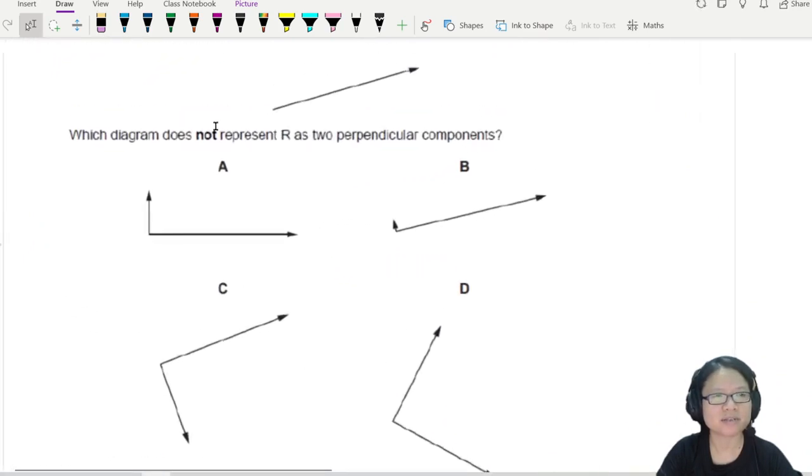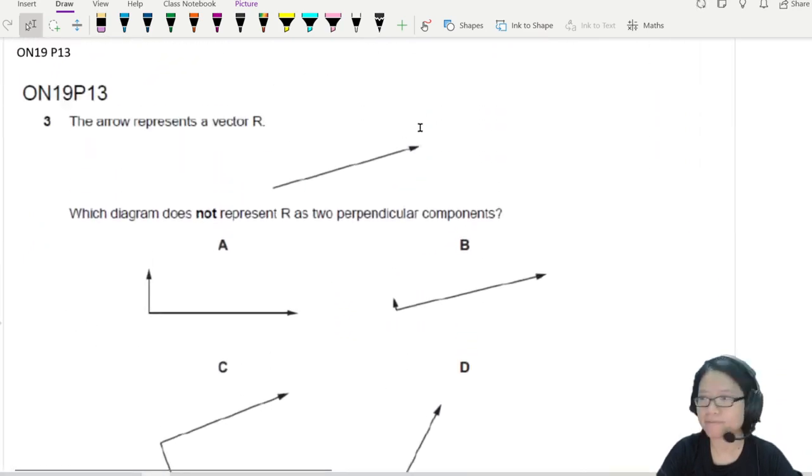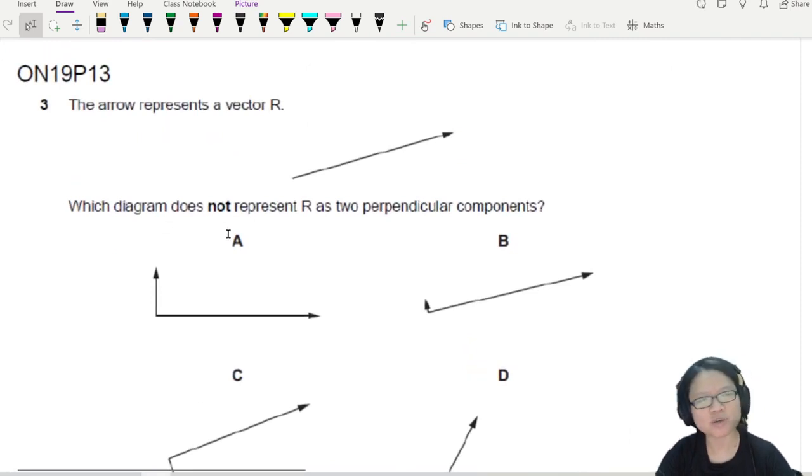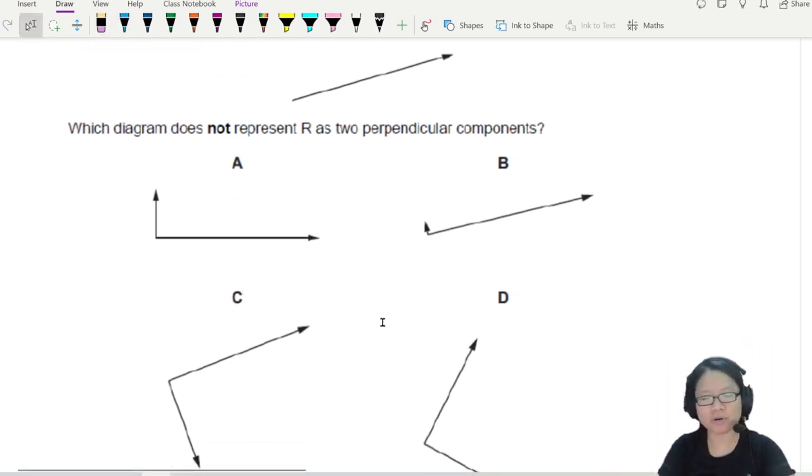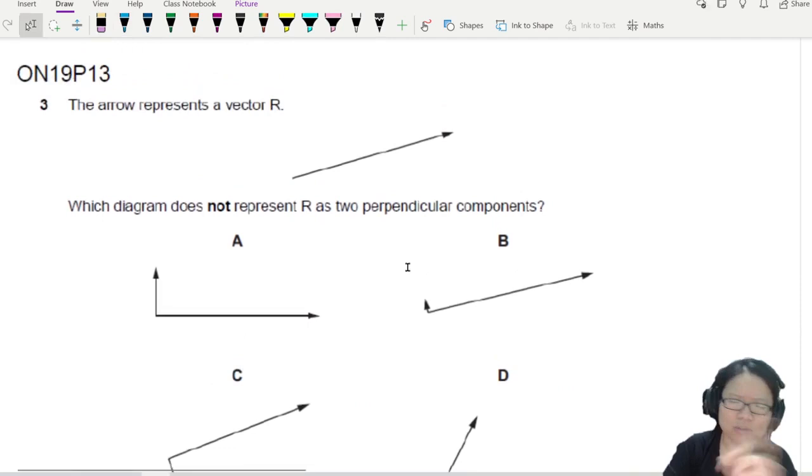Here it says there is a vector R, and then they say which diagram does not represent R as two perpendicular components. Okay, Winter 19 Paper 1 Question 3. All the components are perpendicular. Are we stuck? Not really.